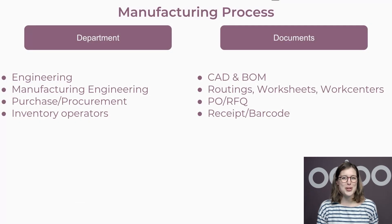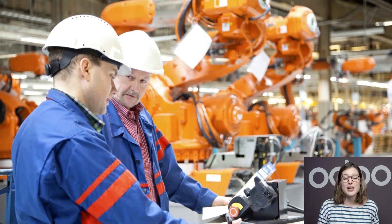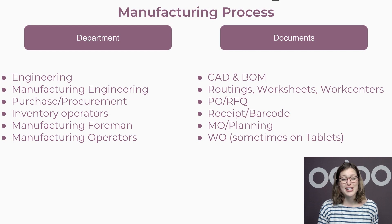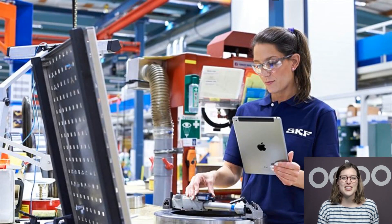Good inventory management is key in manufacturing, so you'll need a great flow for your process to be seamless. Once you have everything you need, work can start. Then the manufacturing foreman will create a manufacturing order and manage the planning of the manufacturing operators. Then the manufacturing operators can start production following a work order, sometimes on a tablet.